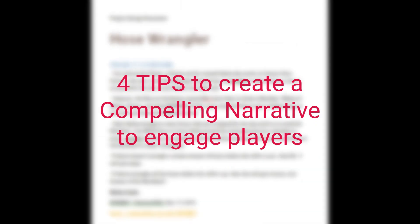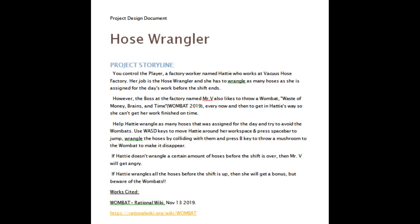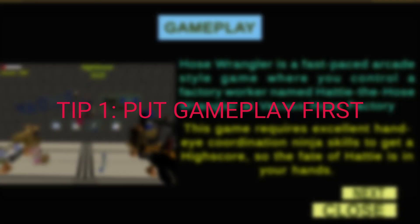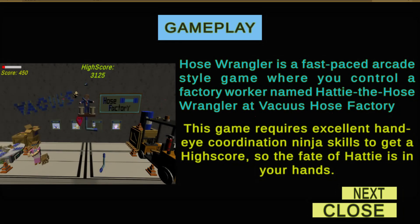Now let's talk about four tips to create a compelling narrative to engage players. Number 1: Put gameplay first. Design the story around the gameplay mechanics, not the other way around.